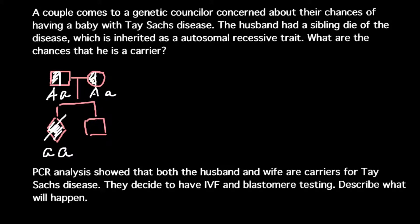One normal allele is enough to produce the hexosaminidase A (hexa) enzyme that prevents the buildup of GM2 ganglioside lipid, which causes this neurological disorder. This lipid would build up in the nerve cells, and the nervous system would be affected first. So now we know that both parents are heterozygous.